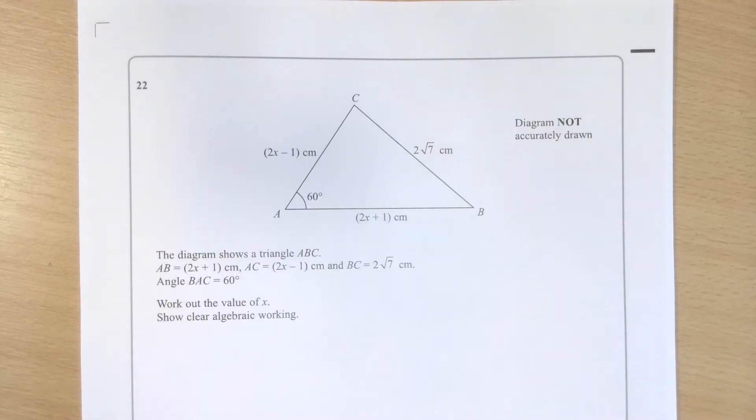Diagram shows triangle ABC. Length AB is 2x plus 1cm. Length AC is 2x minus 1cm, and length BC is 2 root 7cm. Angle BAC here is 60 degrees. I've been asked to work out the value of x, showing clear algebraic working.